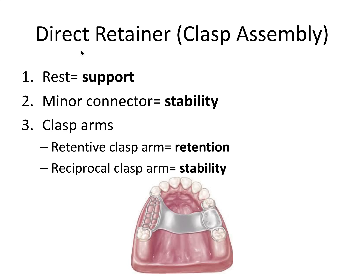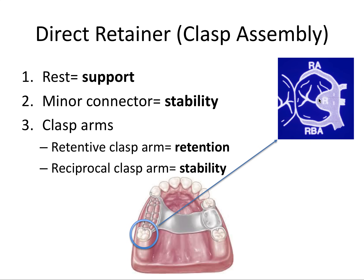We talked about the indirect retainer in the last video — typically a rest located anterior and perpendicular to the axis of rotation. This is its counterpart: the direct retainer, sometimes also called the clasp assembly. Zooming in on an example, we can see several components. The rest, which we talked about in detail previously, is part of this direct retainer and provides support. The minor connector, which we've also discussed, is also part of the direct retainer and provides stability.